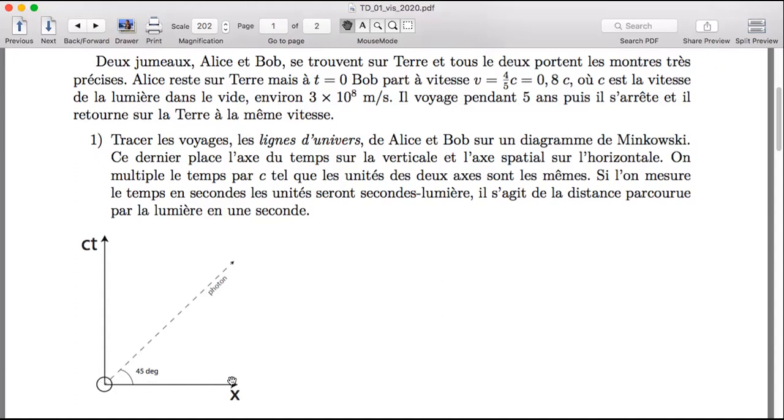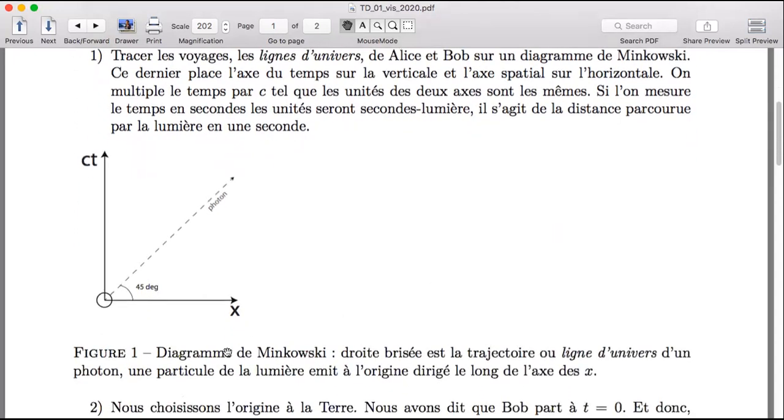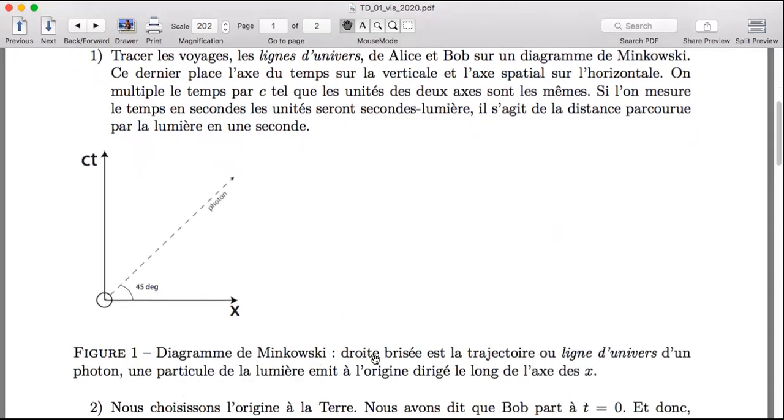Now the, it starts from the origin because the photon started there. It's going in the increasing X direction because that's the direction we aimed the light. Did I say that? Oh no, sorry. I said it. I said it in the caption here. The broken line is the trajectory or the world line of a photon, which is a particle of light that's emitted from the origin and it's directed along the X axis. So in the direction of increasing X. So it only had two choices. It could go back this way or this way. And I'm saying it's going in this direction.